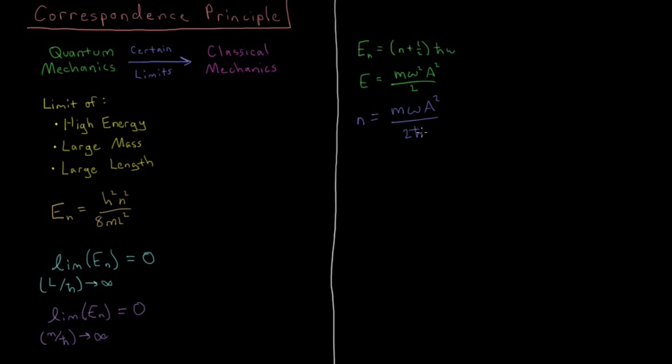So we know h-bar is very, very small, so relative to macroscopic objects, the quantum number we get is going to be very, very big. And if you assume that you have something which weighs about a kilogram, moving about a radian per second, moving about a meter, you're going to get a quantum number which shows up somewhere near 10 to the 35.